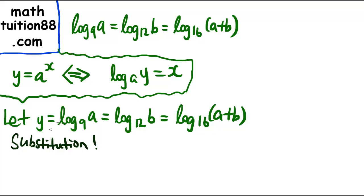Now we will change each of them into exponential form. So using this idea, we have that a = 9ʸ, b = 12ʸ, and a+b = 16ʸ.